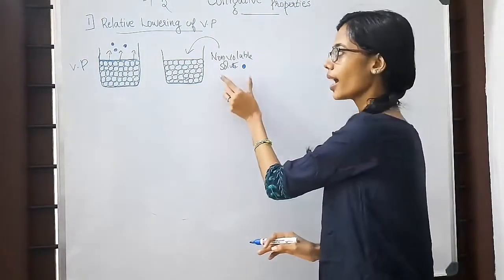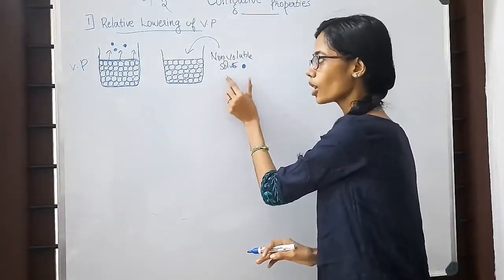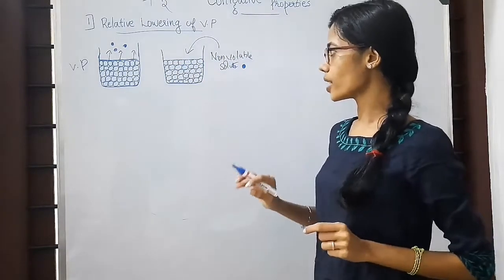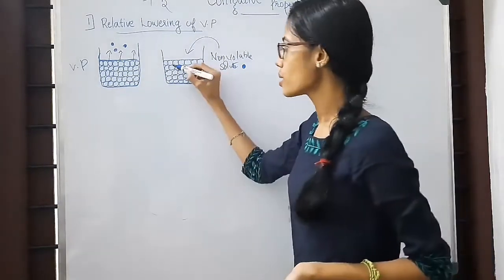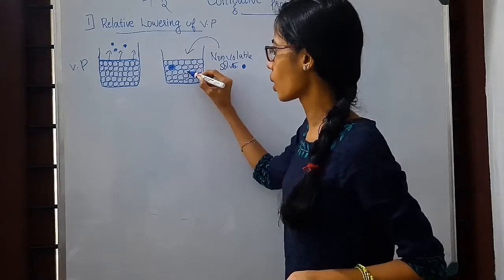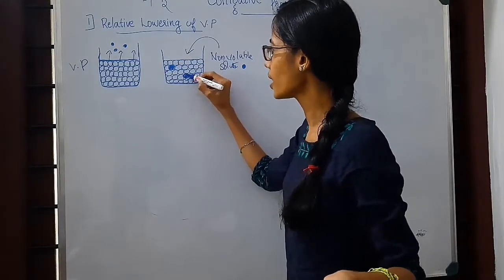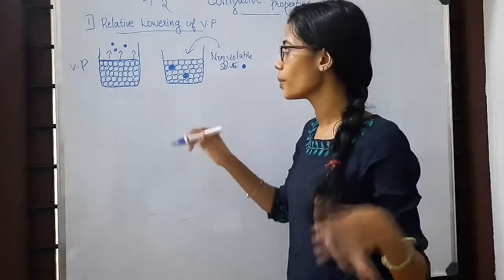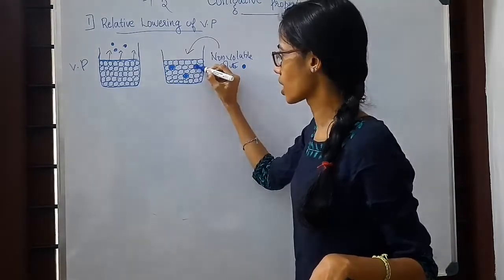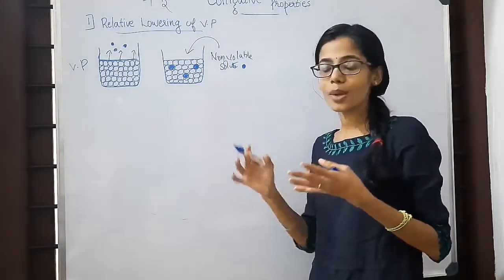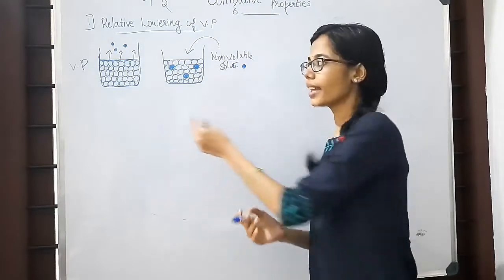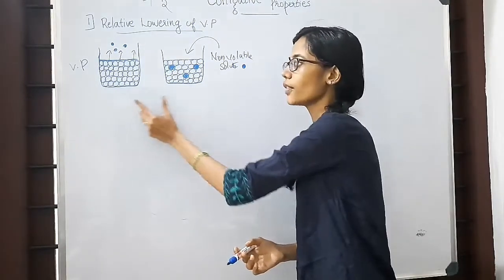Suppose when you are adding a non-volatile solute into this pure solvent, these solute particles are randomly distributed in the solvent. This affects the vapor pressure at the surface layer.